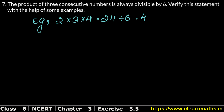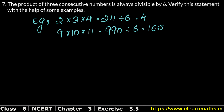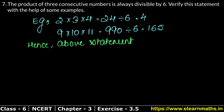Take 9, 10, and 11. Their product is 9 × 10 × 11 = 990. Now let's check if 990 is divisible by 6: 6 × 165 = 990. Yes, it is divisible. So the above statement is true.